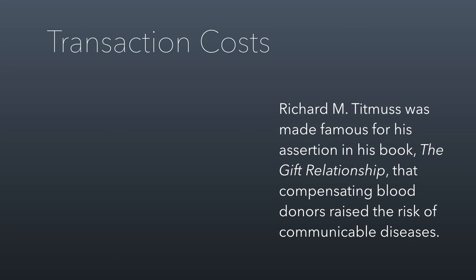My favorite example of this is buying groceries. The cost of your groceries is the amount you pay at the register. The transaction cost of your groceries is the time and money spent to get to the grocery store — gas, wear and tear on your car, time that you could have been working. All of these costs are part of buying your groceries even though they don't actually buy your groceries. The time and money you spend to get there is the transaction cost.